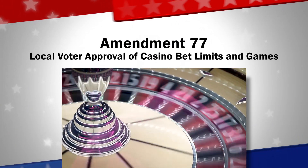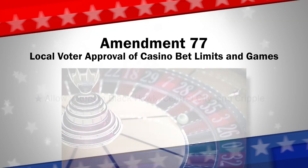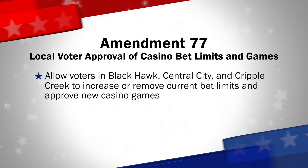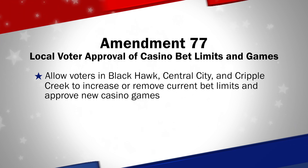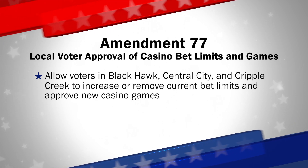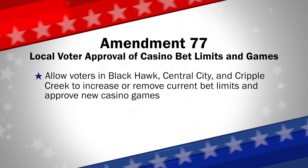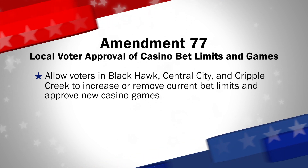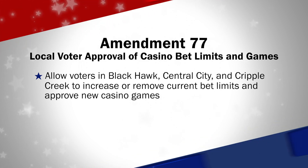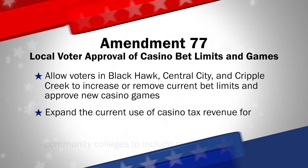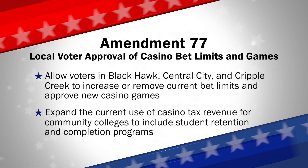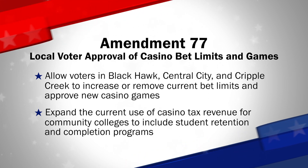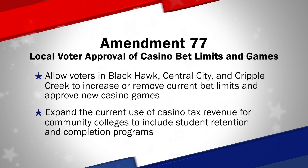Amendment 77 is a citizen initiative. It proposes amending the Colorado Constitution and the Colorado statutes to allow voters in three gaming cities — Blackhawk, Central City, and Cripple Creek — to increase or remove current bet limits and approve any new casino games in each city. It would also expand the current use of casino tax revenue for community colleges to include student retention and completion programs.